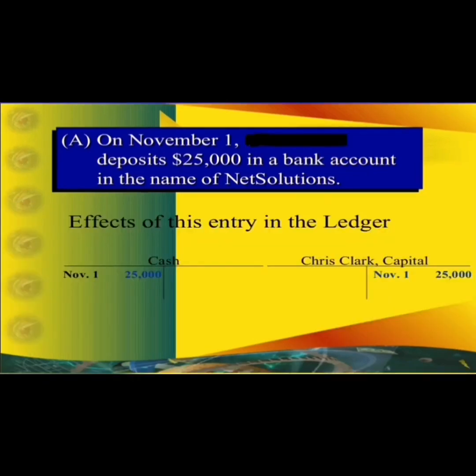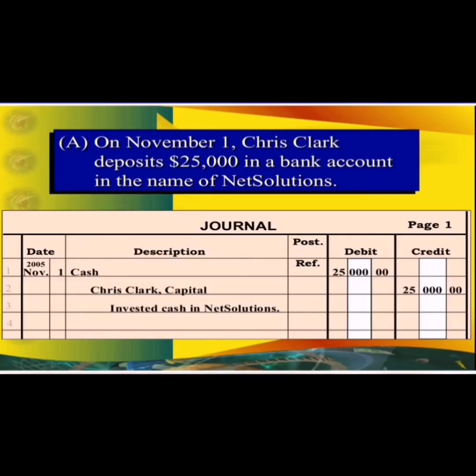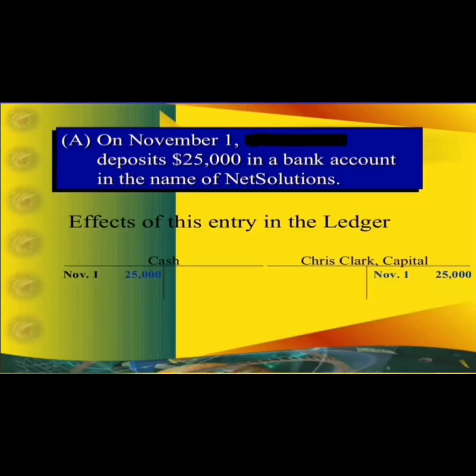The effect of that particular transaction in the ledger is shown as follows. Two accounts are affected: first is cash and second is capital. In the ledger, the first T-account is for cash and the second is for capital. Cash is debited with 25,000 and capital is credited with 25,000.